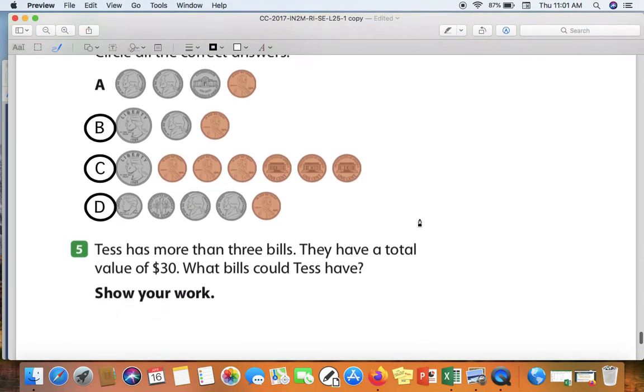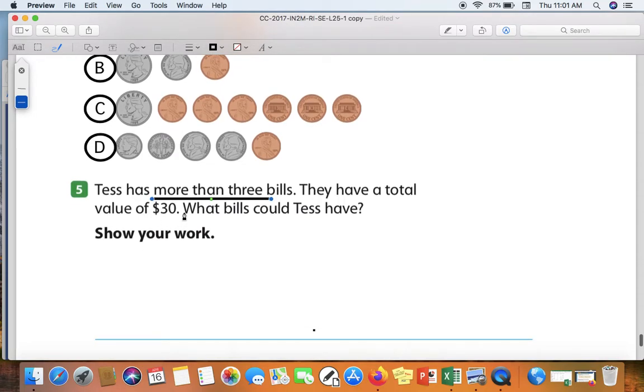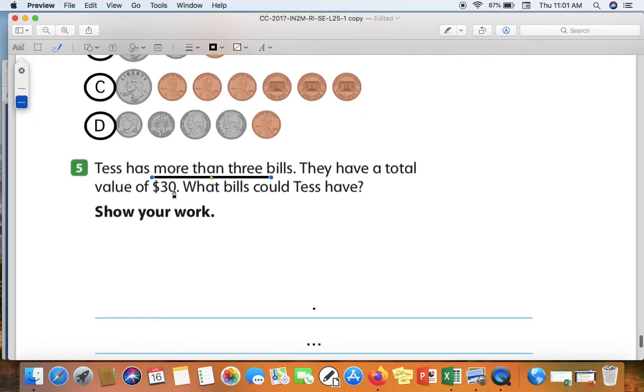Tess has more than three bills. They have a total value of thirty dollars. What bills could Tess have? I think immediately when we try to picture thirty dollars in our head using bills, right away we think of three ten dollar bills. But that's not going to work here, because she has to have more than three bills. How could we make thirty dollars using more than three bills?